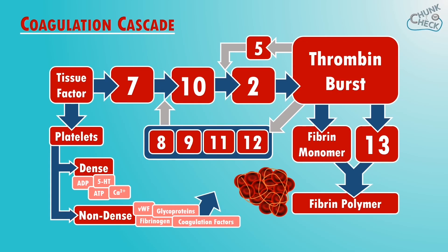Let's talk about the factors which balance this process. On one side of the balance you have pro-coagulation factors which include the endothelial surface, platelets, von Willebrand factor and all the coagulation factors that we've mentioned so far.